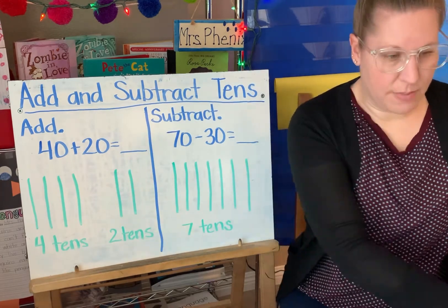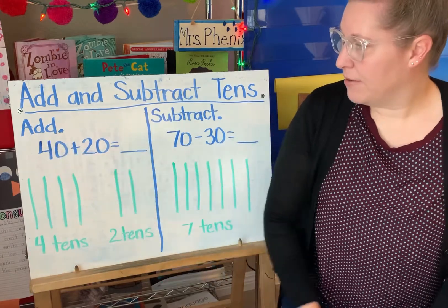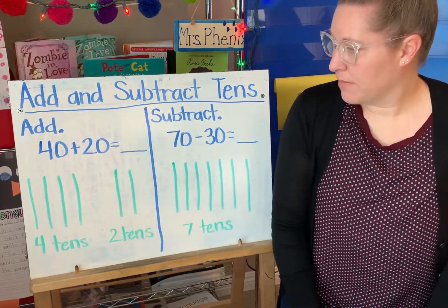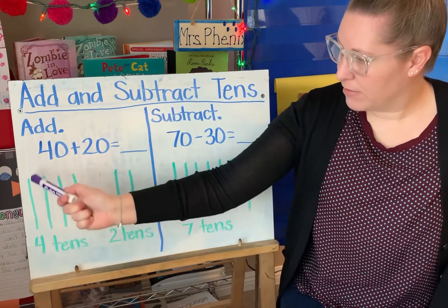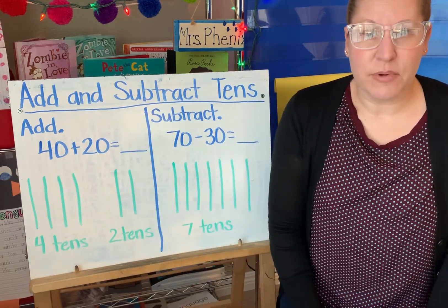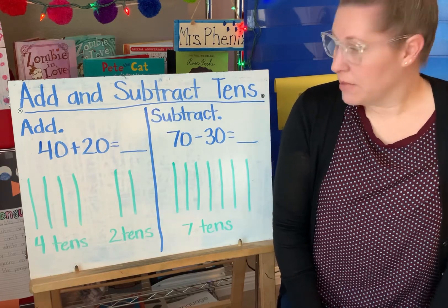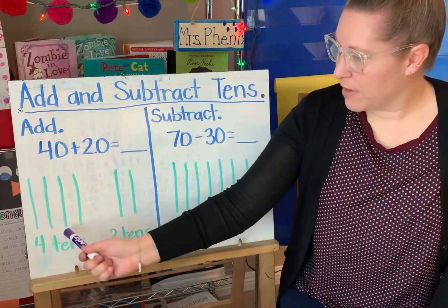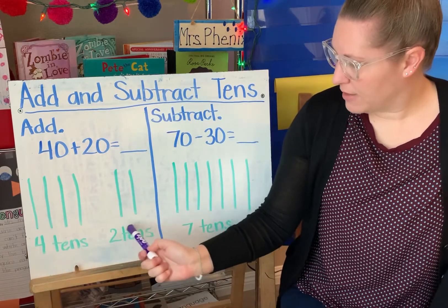Let's take a look at some examples on the board here. Let's add 40 plus 20. You might notice that I've made a very simple drawing, just a line to show my 10s. We're going to do a really easy drawing to show it. So 40 plus 20 — here's my four 10s, that's my 40. Here's two 10s, that's 20.